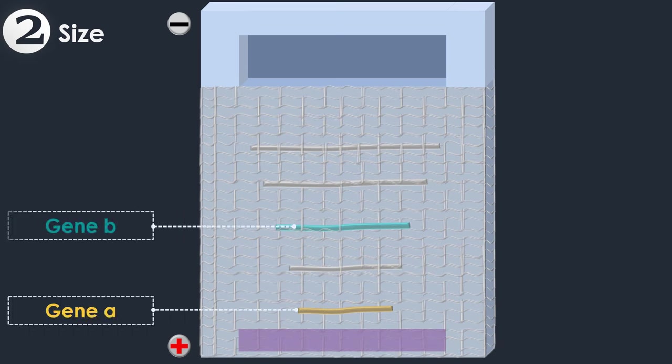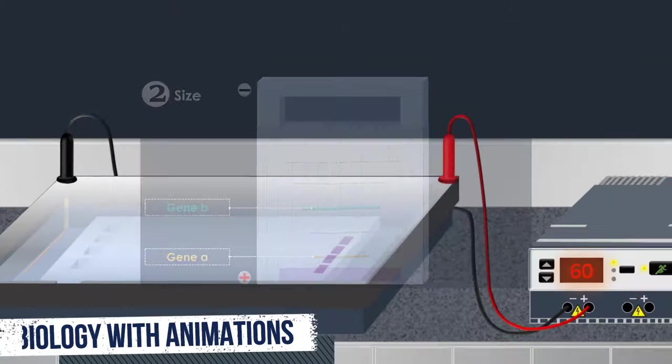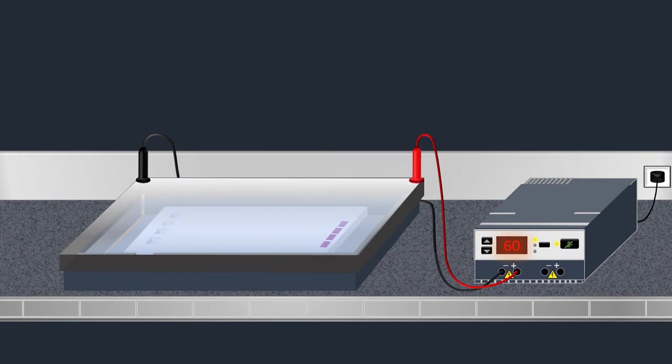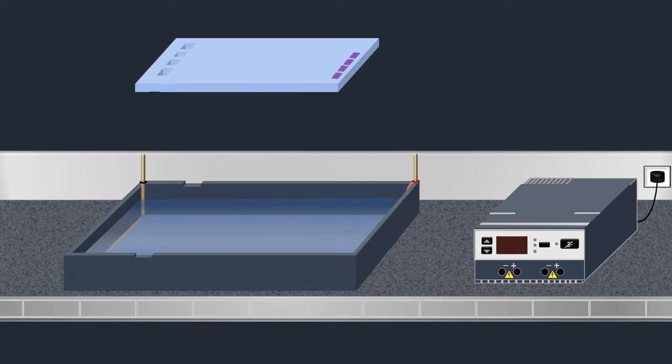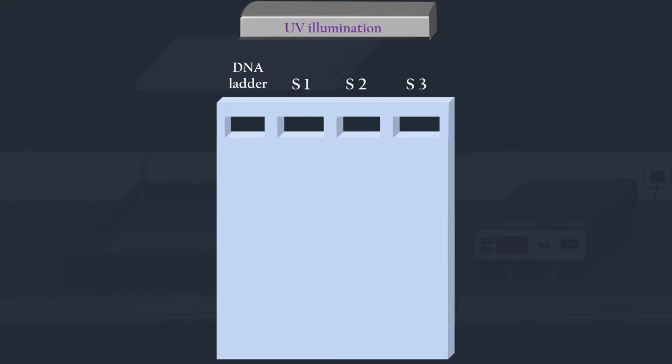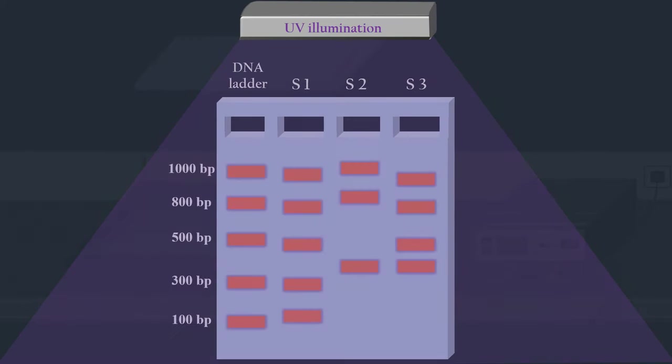After the electrophoresis is complete, the molecules in the gel can be stained to make them visible. When the gel is stained with an intercalating dye such as ethidium bromide, the DNA fragments can be seen under UV light as bands, each representing a group of same-size DNA fragments.